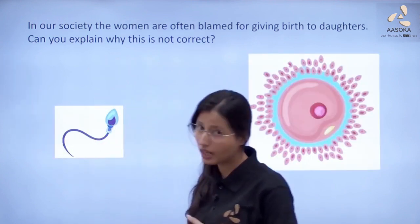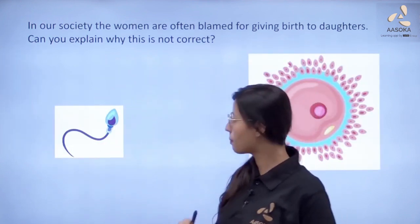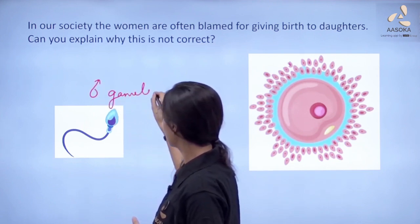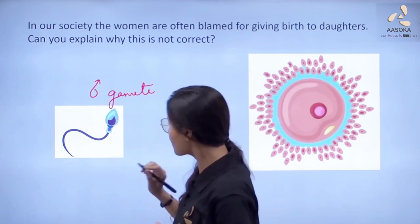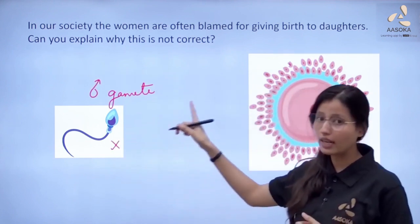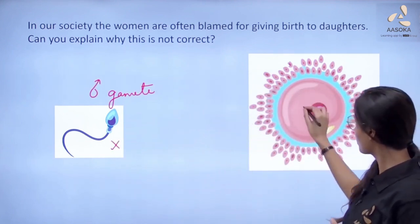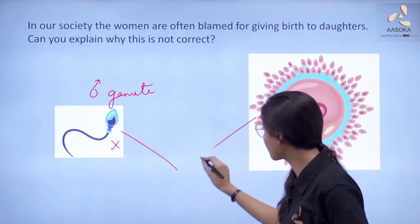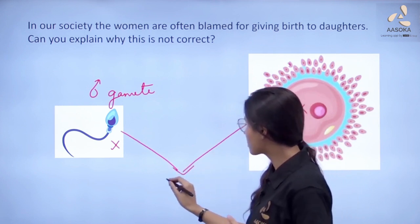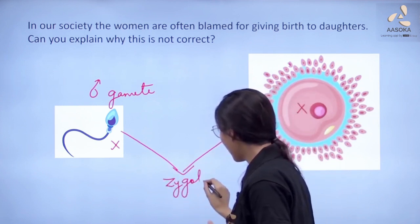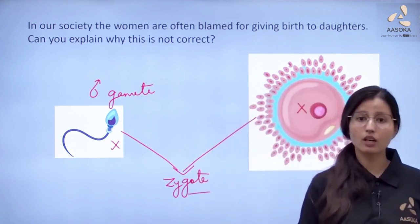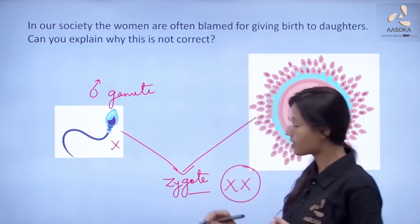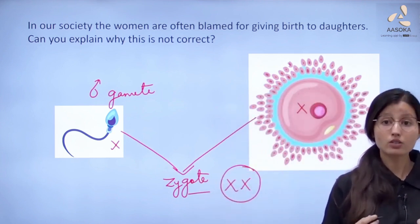At the time of fertilization, if the sperm — which is the male gamete — contains the X sex chromosome and fertilizes with the ovum containing the X sex chromosome, there will be production of a zygote and that zygote will be a female, because it will contain the XX type of sex chromosome.